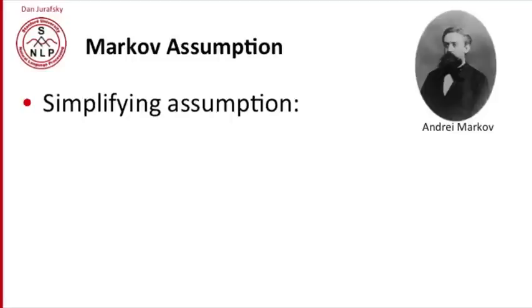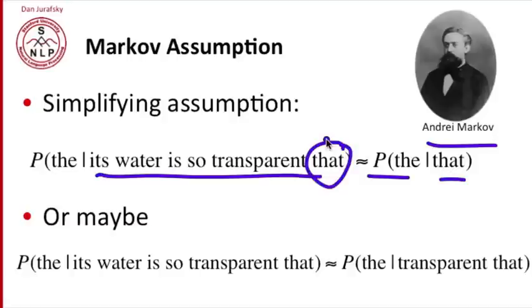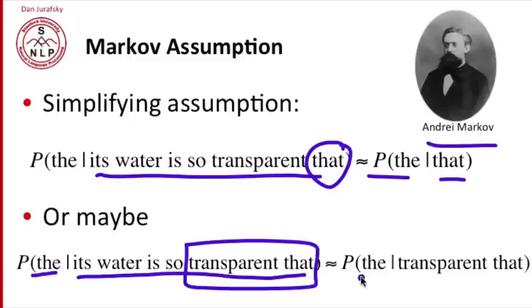So what we do instead is we apply a simplifying assumption called the Markov assumption named for Andrey Markov. And the Markov assumption suggests that we estimate the probability of the given its water is so transparent that just by computing instead the probability of the given the word that, or the very last word, or maybe we compute the probability of the given just the last two words. So the given transparent that. So that's the Markov assumption. Let's just look at the previous or maybe the couple previous words rather than the entire context.